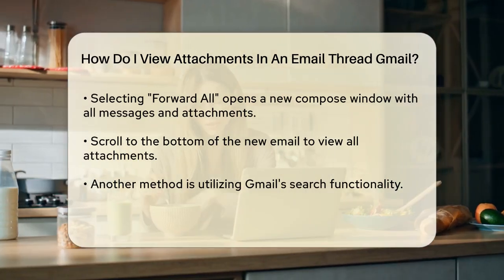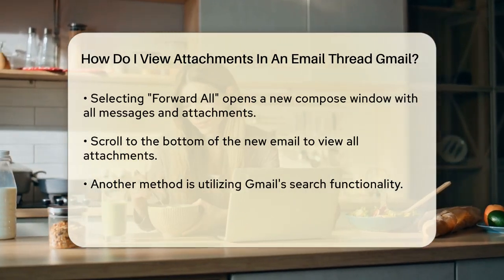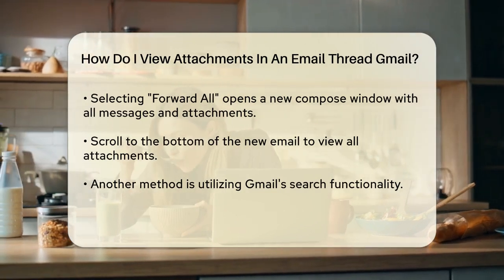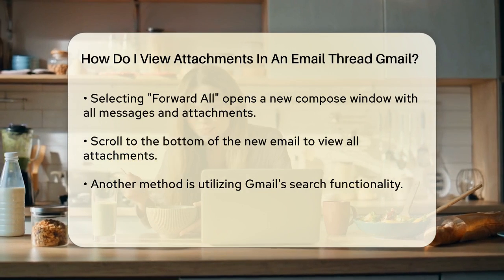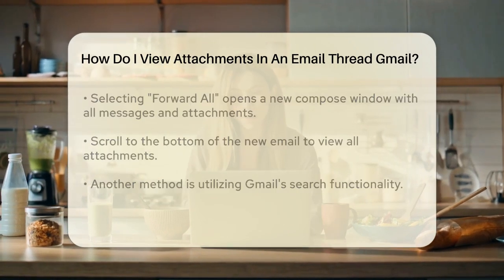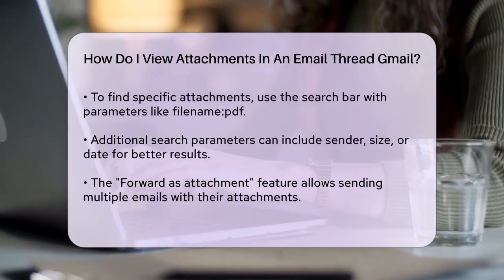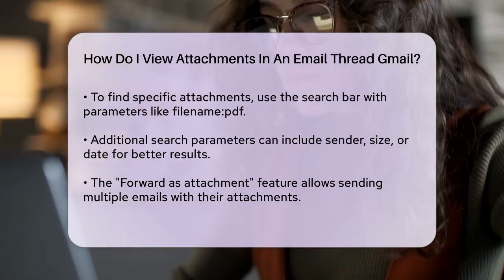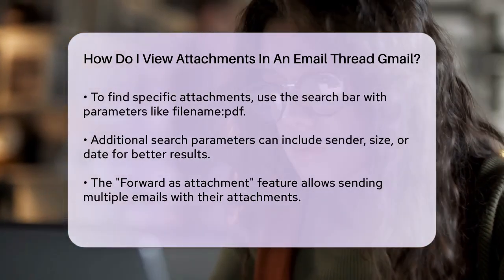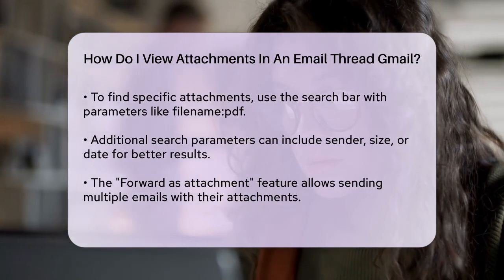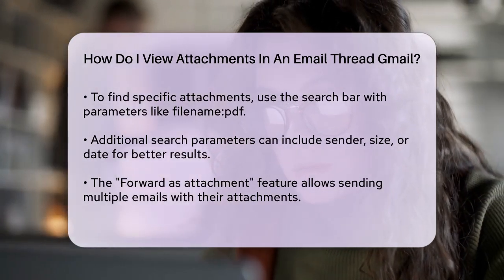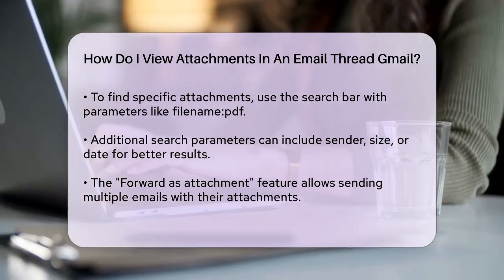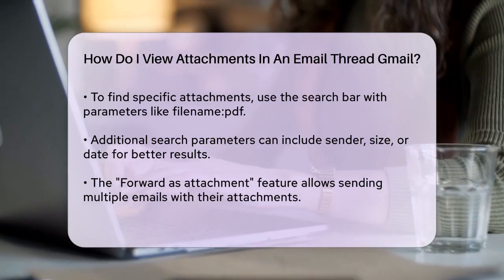Another approach is to use Gmail's powerful search functionality. If you're looking for a specific type of attachment, you can use the search bar at the top of Gmail. For example, if you're searching for all PDF attachments, type filename PDF and hit enter. This will show you all emails with PDF attachments. You can also add other search parameters like the sender, size, or date to narrow down your search.